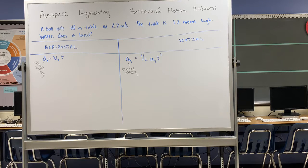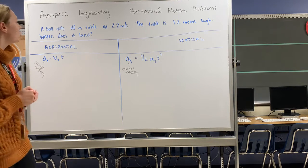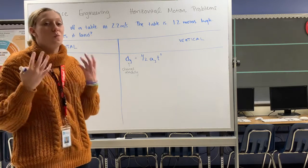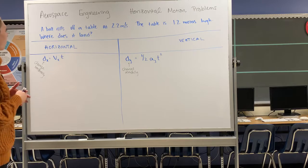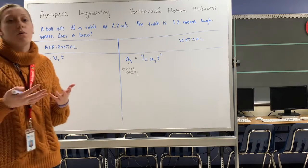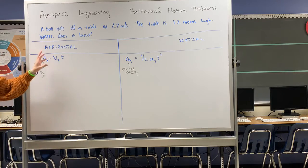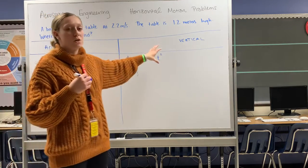According to my challenge problem, a ball rolls off the table at 2.2 meters per second and the table is 1.2 meters high. I want to know where does it land. I've broken up my whiteboard into two different sections, focusing on how this is changing horizontally and how this is changing vertically.